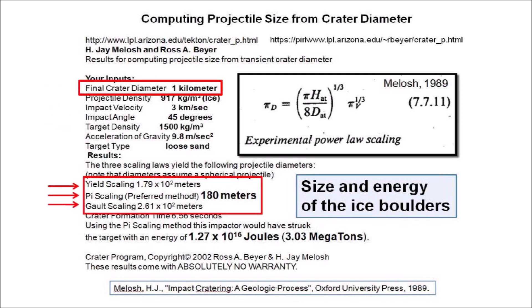The calculation for a Carolina Bay with a diameter of 1 kilometer made by an ice projectile with a velocity of 3 kilometers per second on loose sand produces three estimates for the size of the ice projectiles that range from 179 meters to 261 meters in diameter. The pie scaling method, which is the preferred method, predicts a projectile diameter of 180 meters. An ice projectile with a diameter of 180 meters at a speed of 3 kilometers per second has kinetic energy equivalent to 3 megatons of TNT.